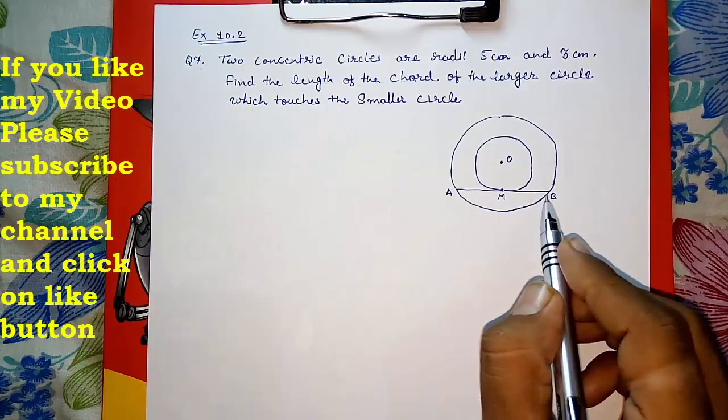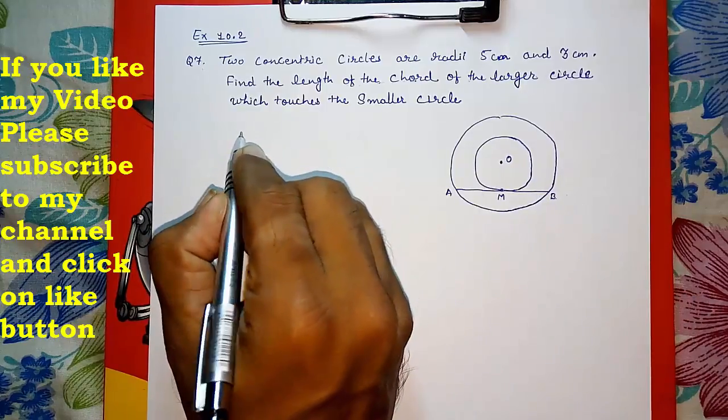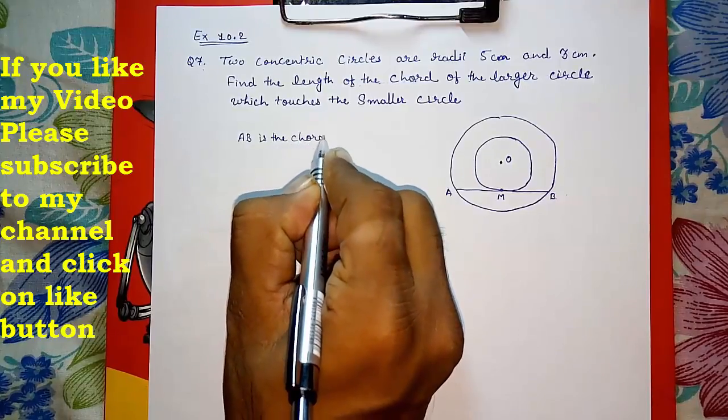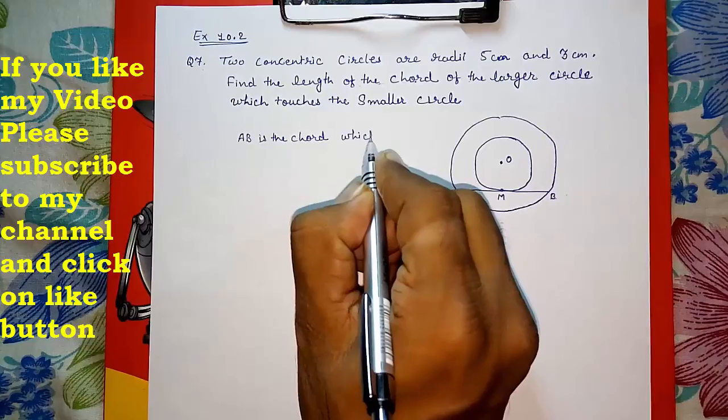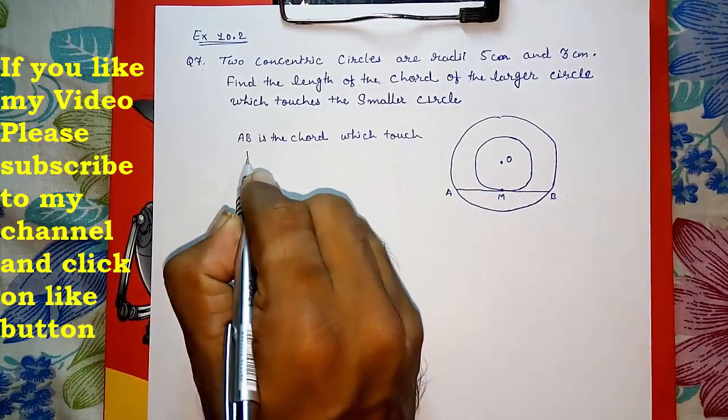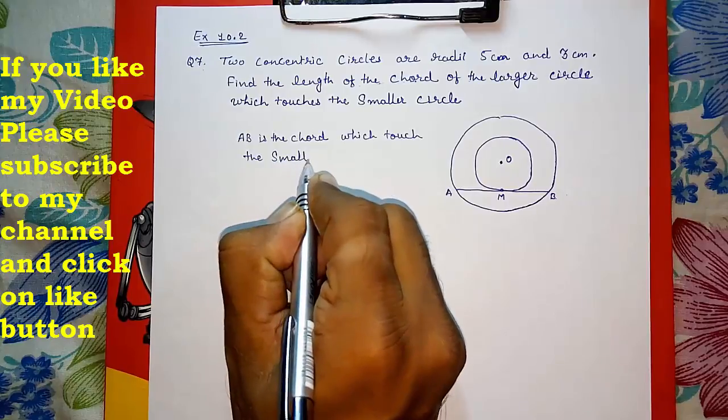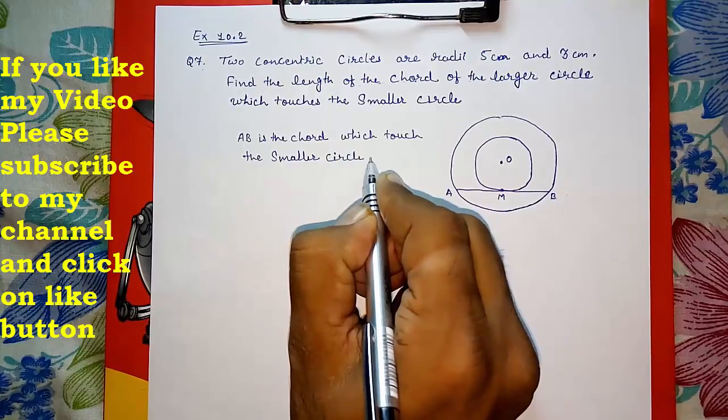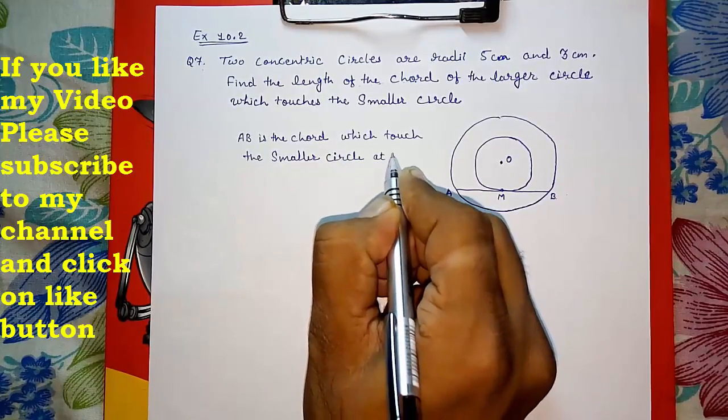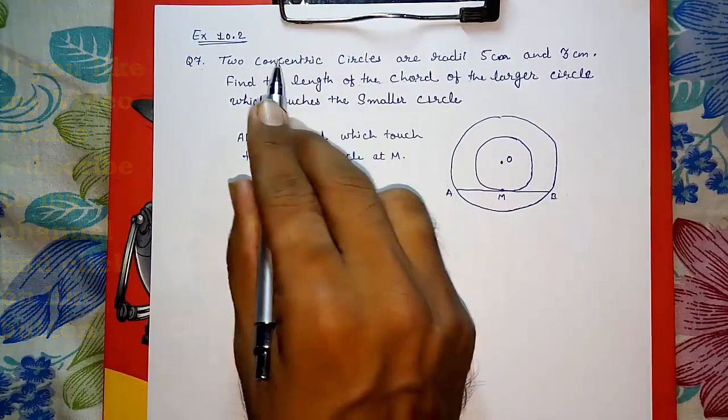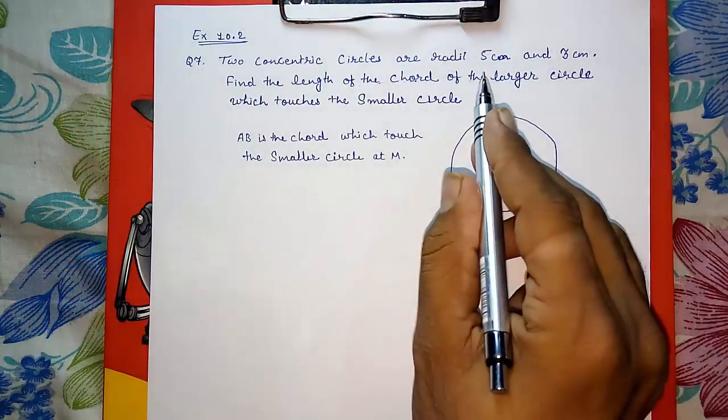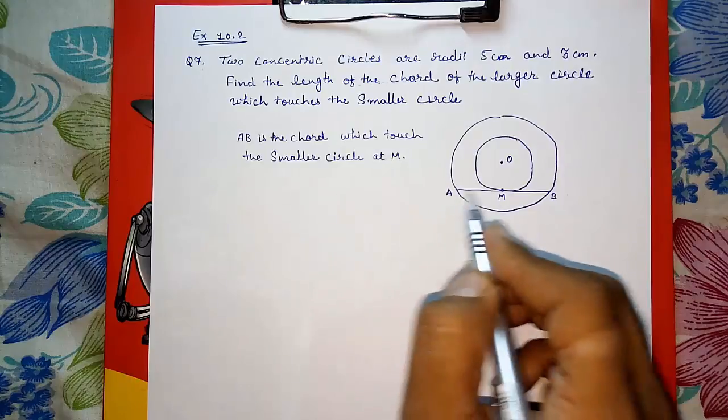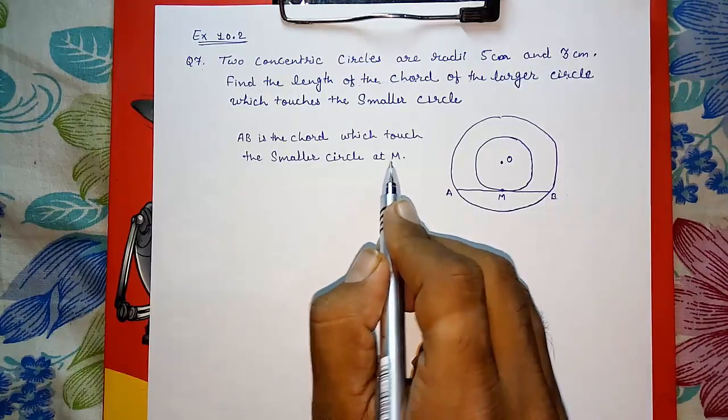AB is the chord which touches the smaller circle at M. I am writing this because they had not given us any name of any chord or any point, that's why we have to write this. So I had written AB is the chord which touches the smaller circle at M. Now we want to find AB.